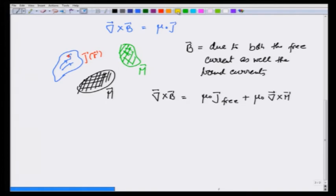Remember, curl of M is j_bound. Therefore, I can write this equation as curl of (B minus μ₀ M) equals μ₀ j_free.